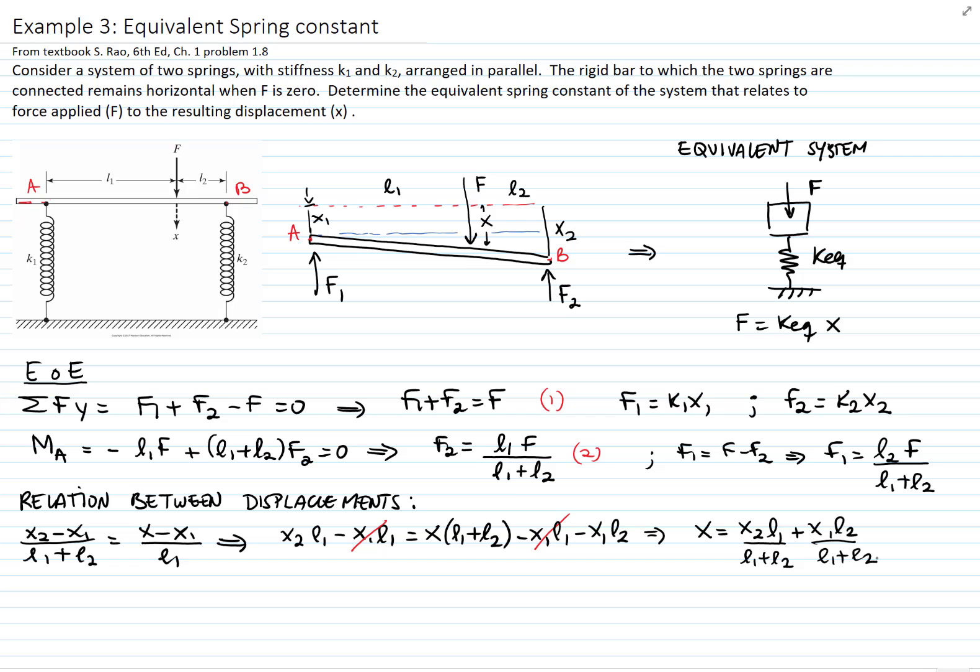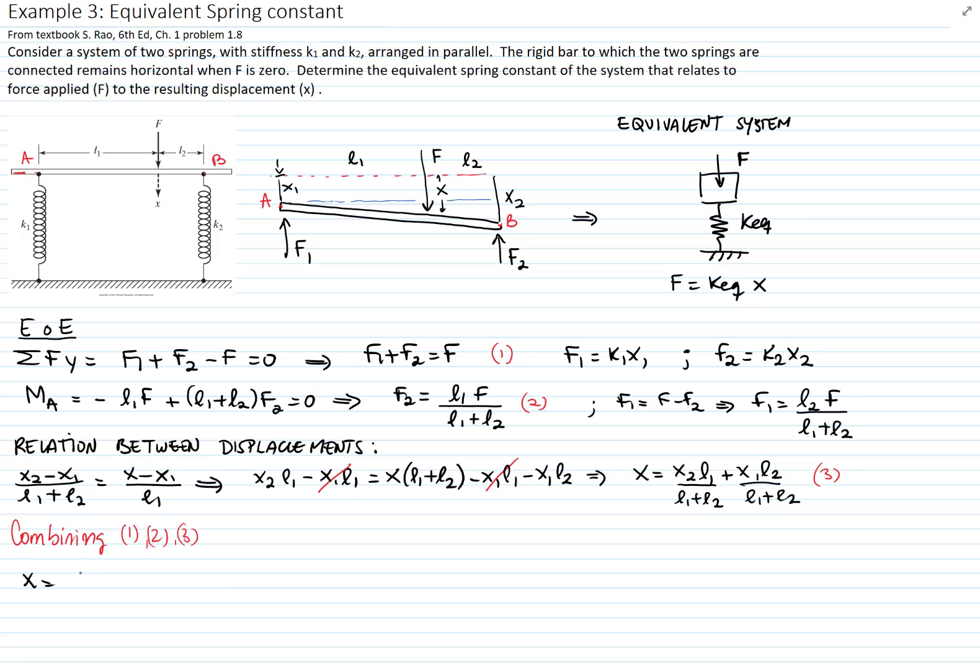I will call this equation number 3. I will combine now the relations that I have for the forces with the one I have for the displacement, because we want to get a relation between force and displacement. What I will do is substitute X2 and X1 by F1 and F2 over the respective K's. So X2 in this case will be F2 over K2, and in the next term, X1 will be equal to F1 over K1.